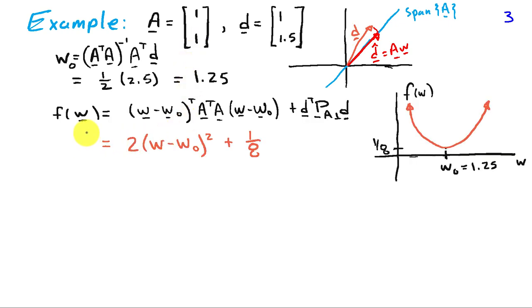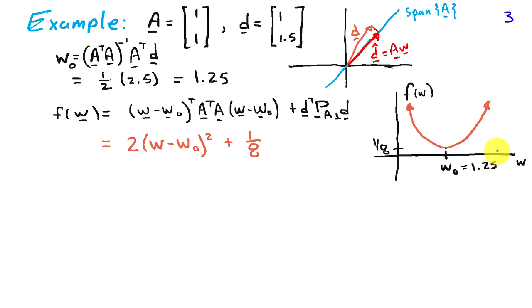Looking at the geometry associated with w: f(w) = (w − w₀)ᵀ AᵀA (w − w₀) plus the magnitude of the error vector squared. Substituting AᵀA, which turns out to be the scalar 2, and noting that w is a scalar, f(w) becomes 2(w − w₀)² + 1/8. Inspection reveals that this is a parabola. So f(w) graphed as a function of w has a minimum at w₀ = 1.25 with value 1/8, and a quadratic function — a parabola — that extends upward as we move away from w₀. The cost function is concave up with a single minimum at w₀.